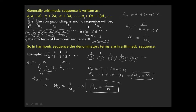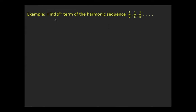For example, finding the tenth term: put n = 10, so h10 = 1/10. The next example is to find the ninth term of the harmonic sequence 1/2, 1/5, 1/8, and so on.